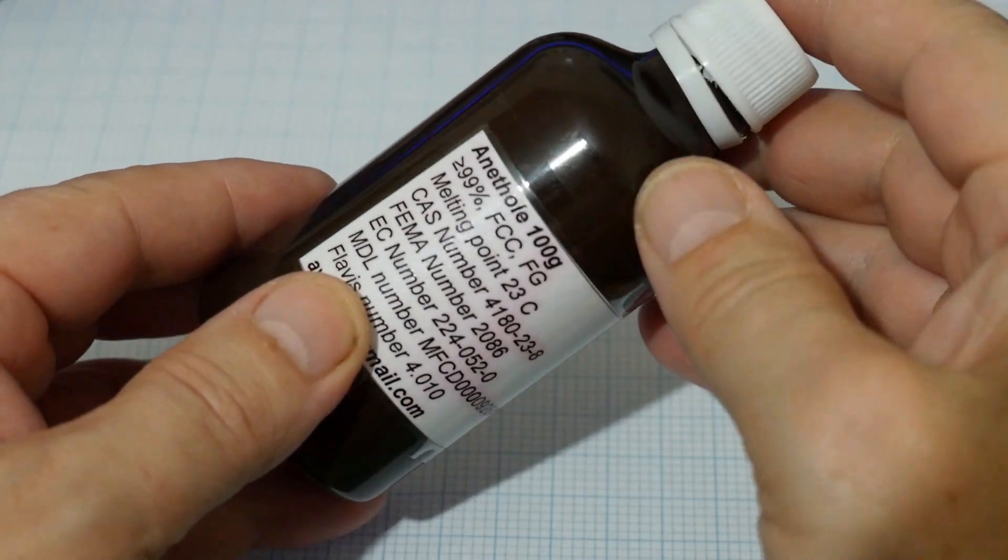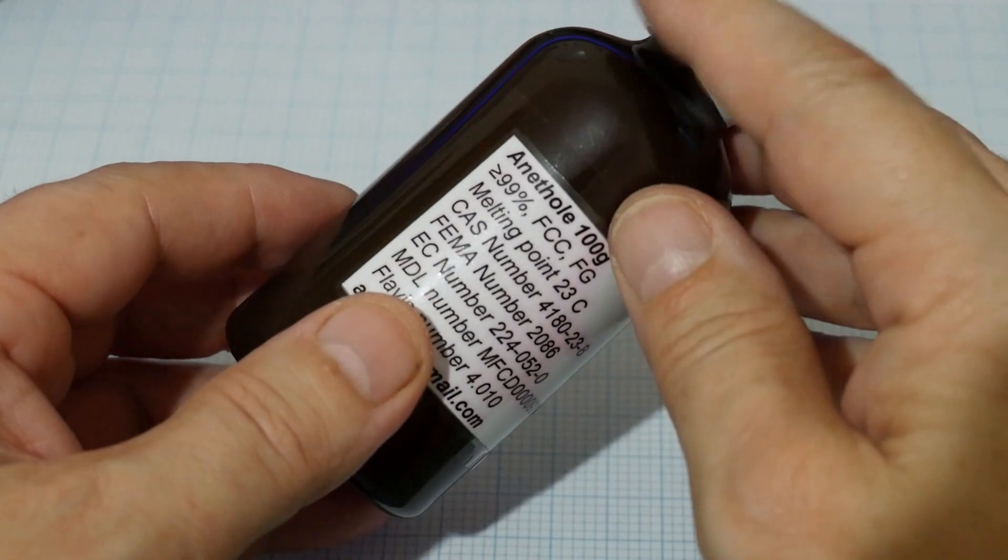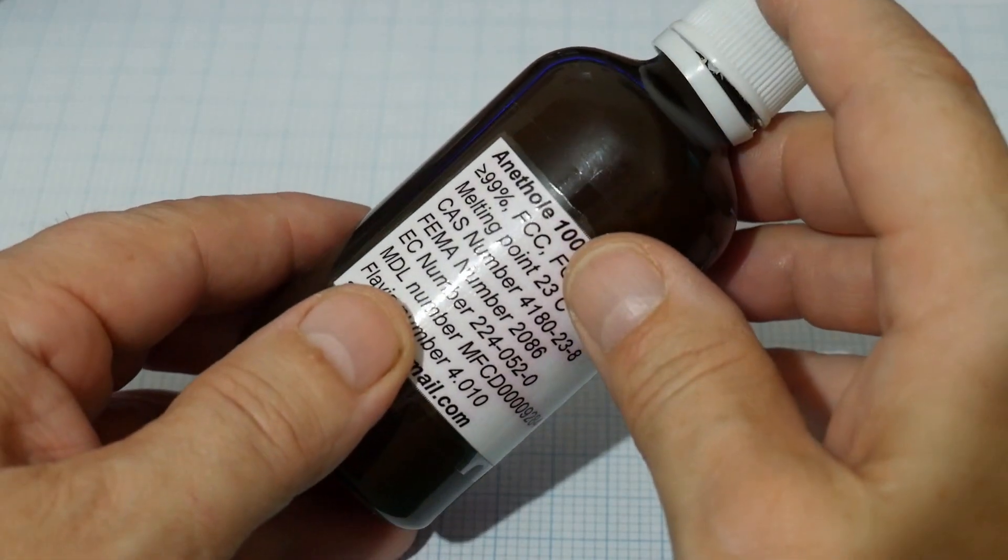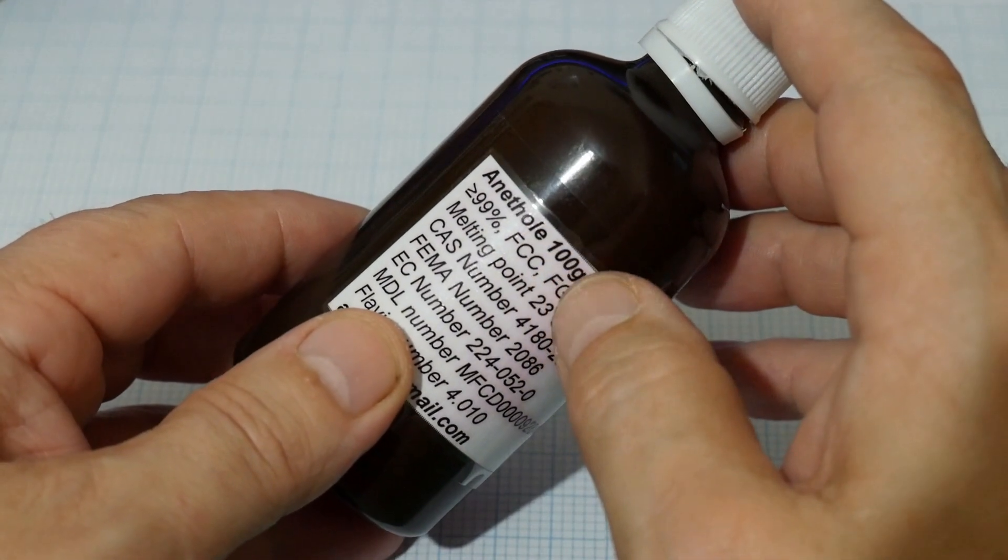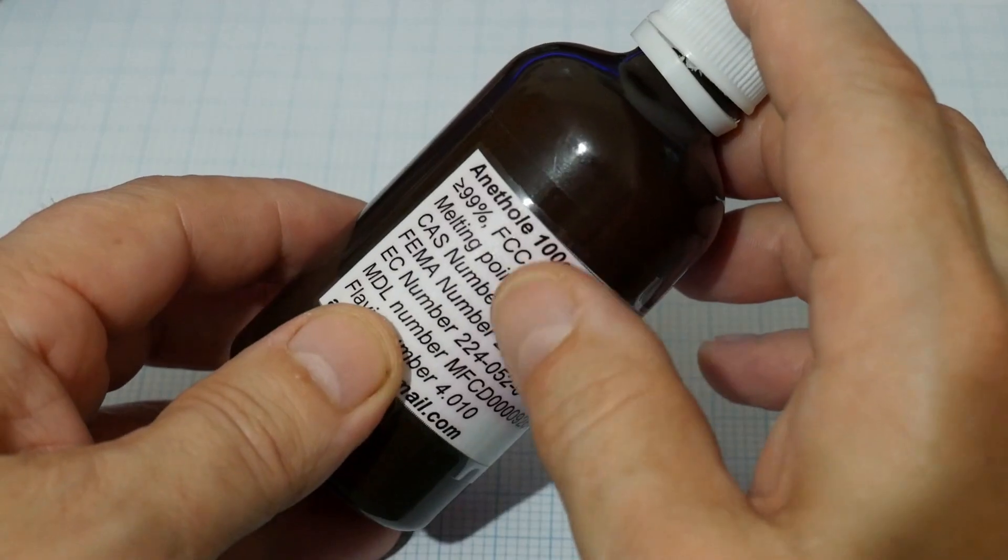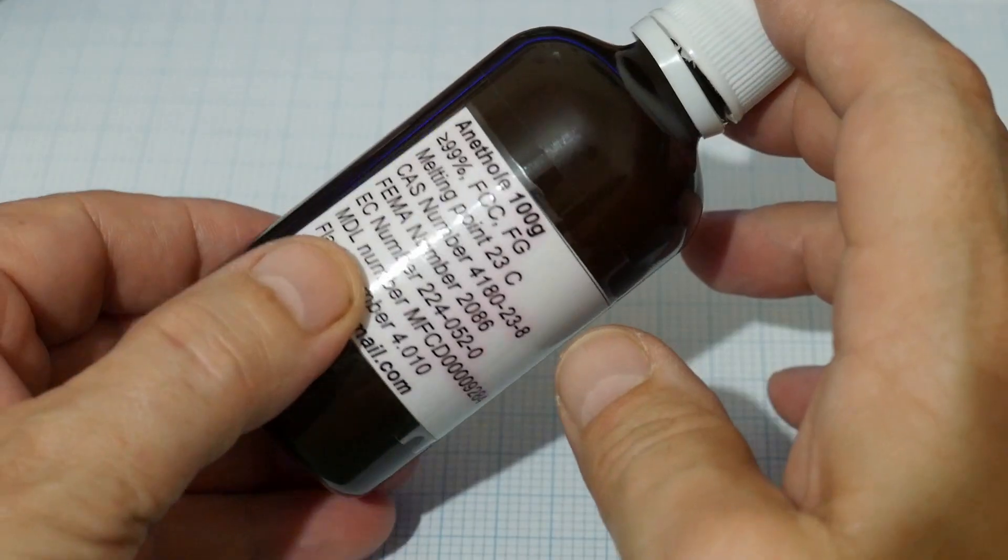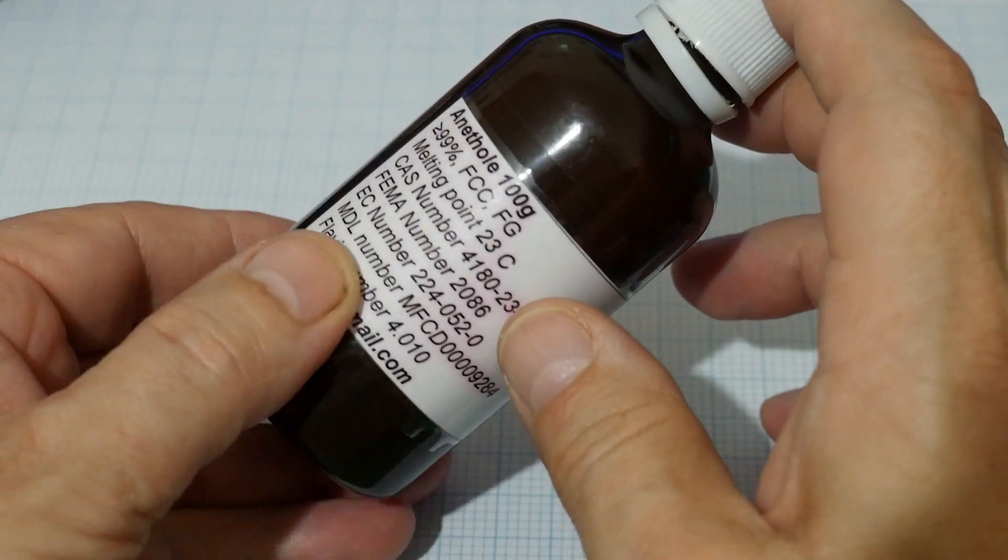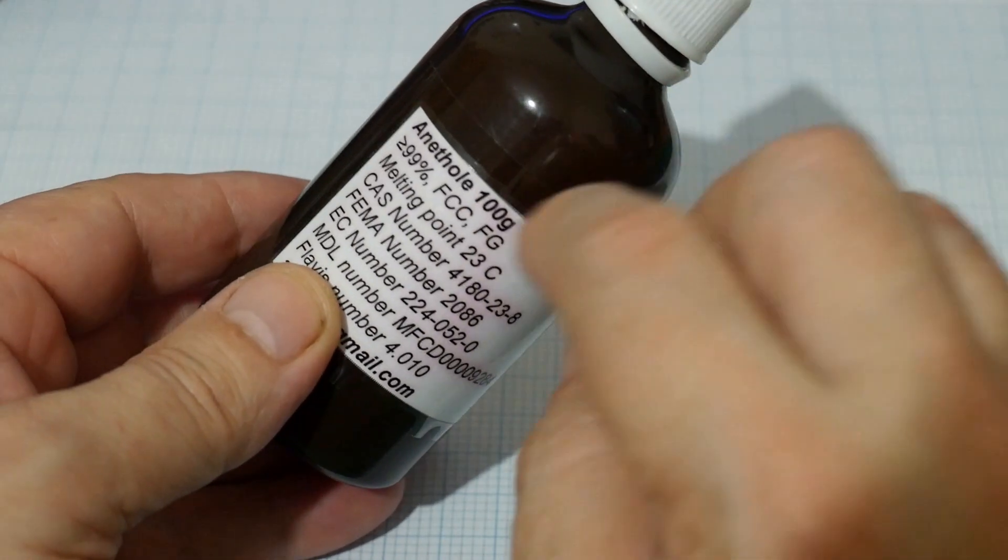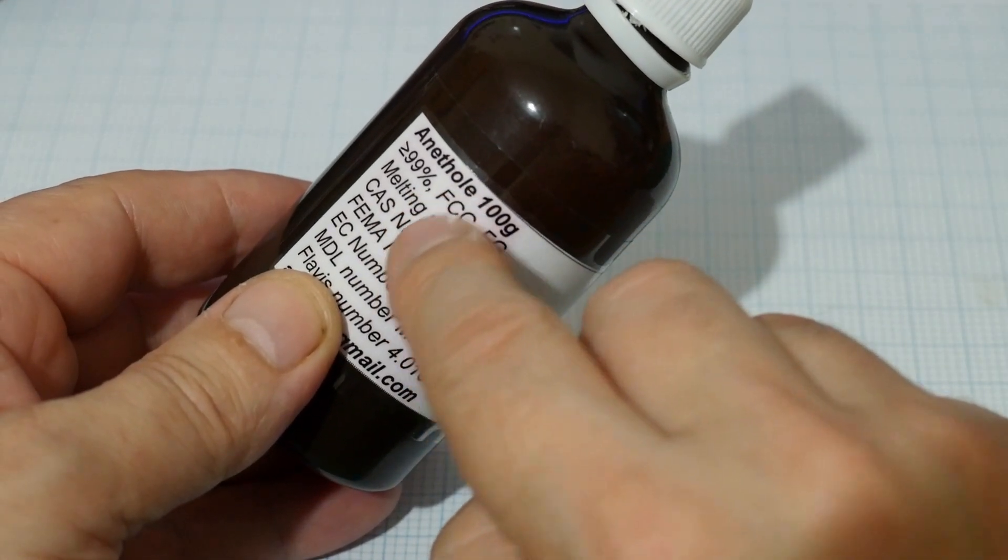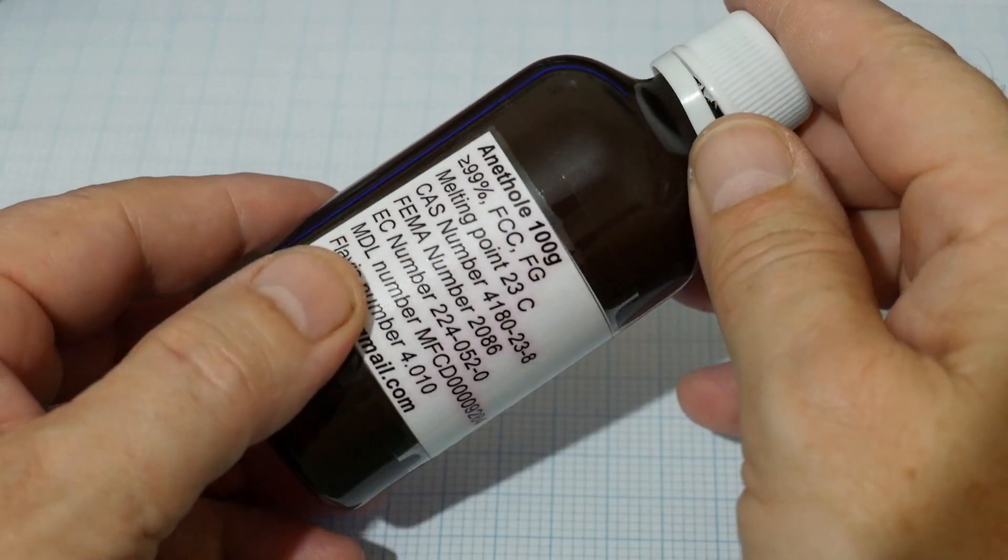I actually managed to get hold of some anethole from the Ukraine of all places. I bought this from a seller on eBay. I'll put the link in the description down below. I'm not affiliated with them, but they have some interesting chemicals. This is greater than 99% pure, which should be good enough for a Kerr cell demonstration. The melting point of this is supposed to be 23 degrees, but I've found that with this stuff I've got to cool it significantly below that to get it to freeze, at which point it sort of turns into a crystalline waxy solid. I'd be interested to see if it would be possible to actually distill or purify this in some way.